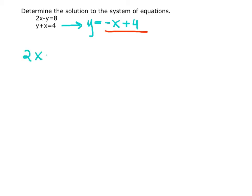So 2x minus y equals 8 is our first given equation. If we take negative x plus 4 and we plug it in for the y, we can rewrite this equation as 2x minus negative x plus 4 and that all equals 8.